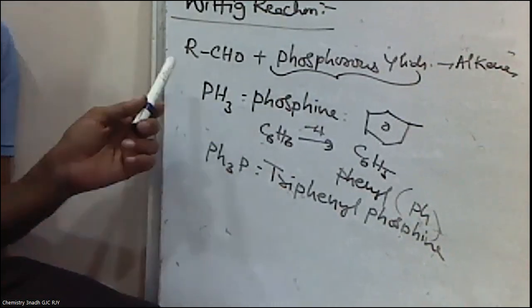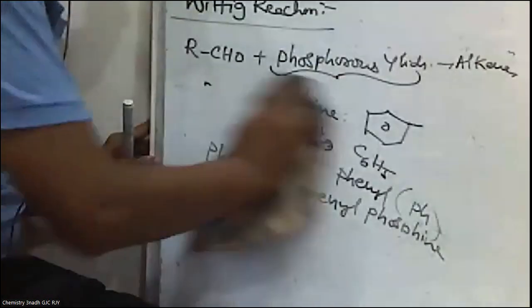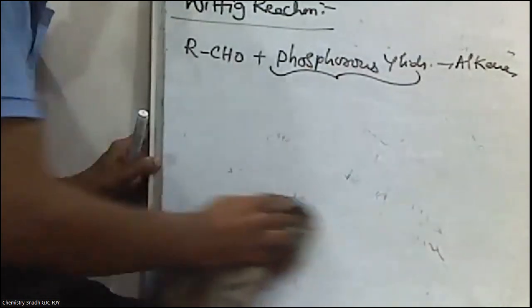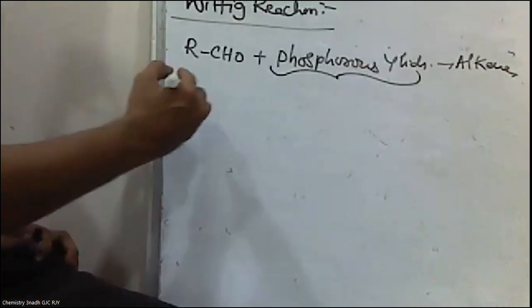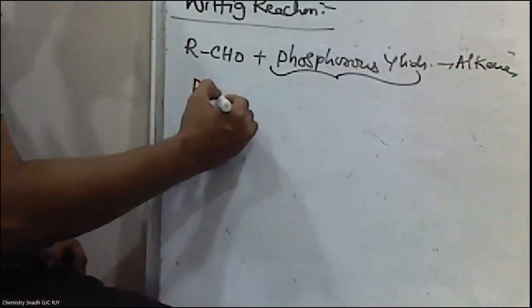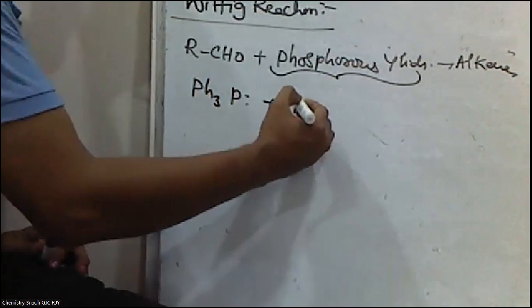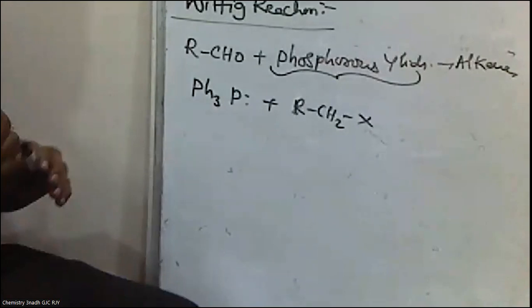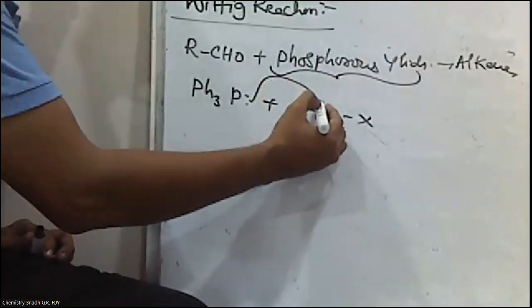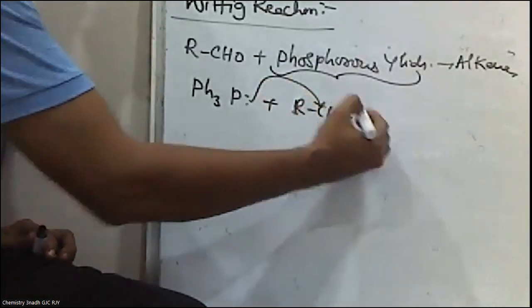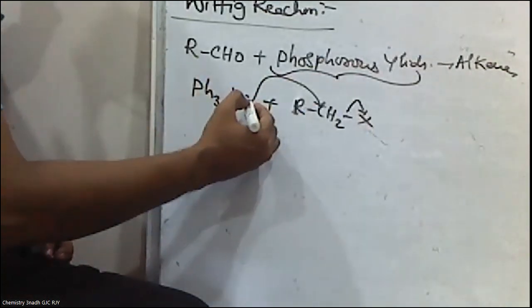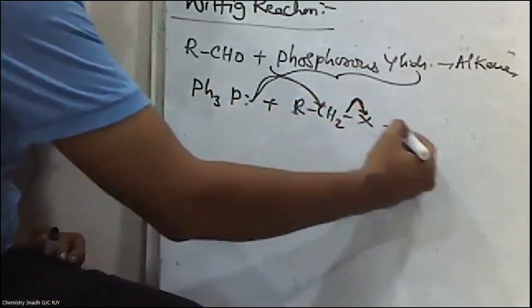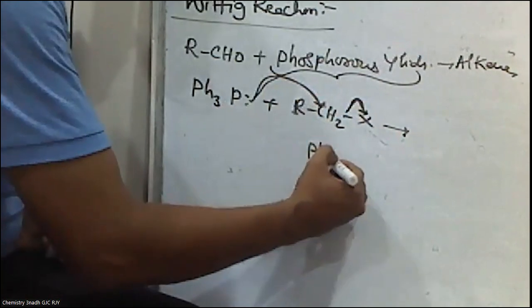Triphenylphosphine — in triphenylphosphine, the phosphorous atom has a lone pair of electrons. When triphenylphosphine is treated with alkyl halides, the lone pair present on the phosphorous attacks the carbon of the alkyl halide, and a bond rearrangement occurs giving Ph3P-CH2.